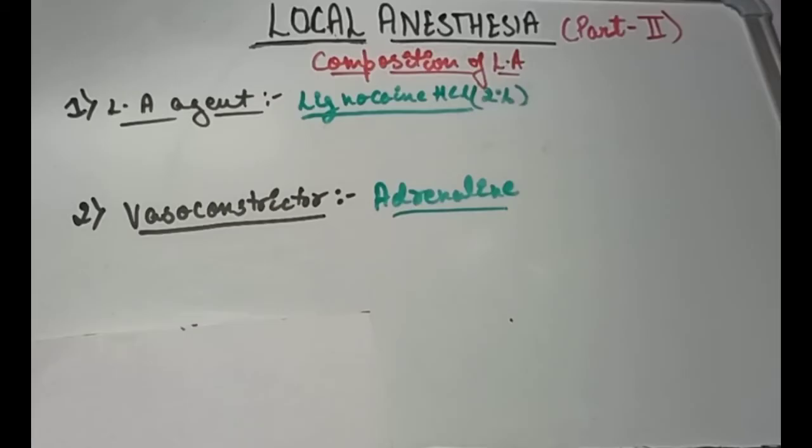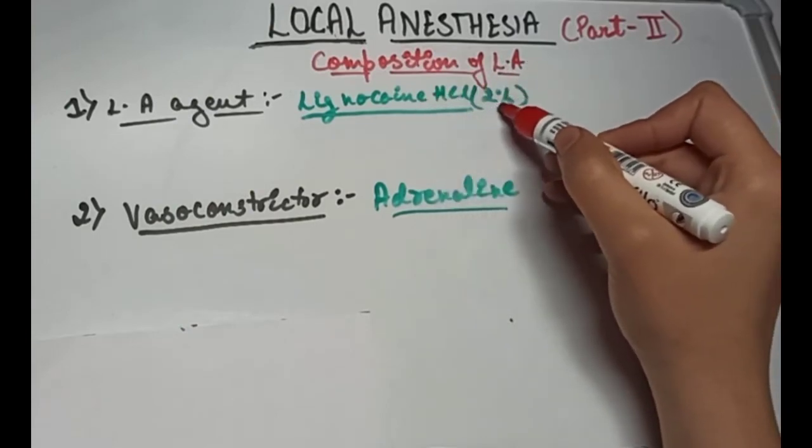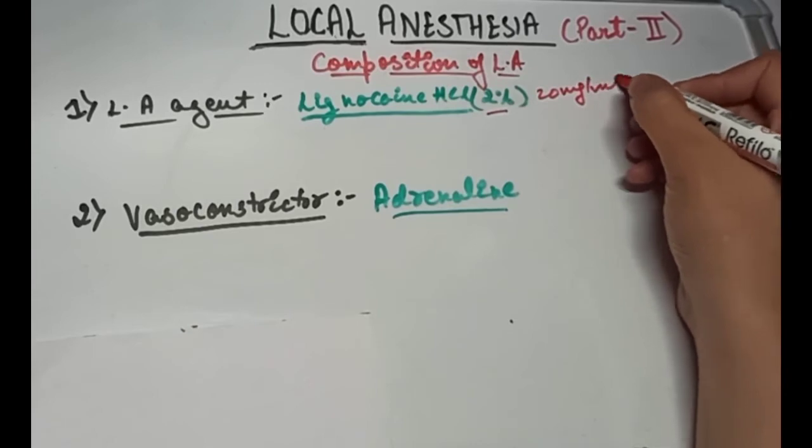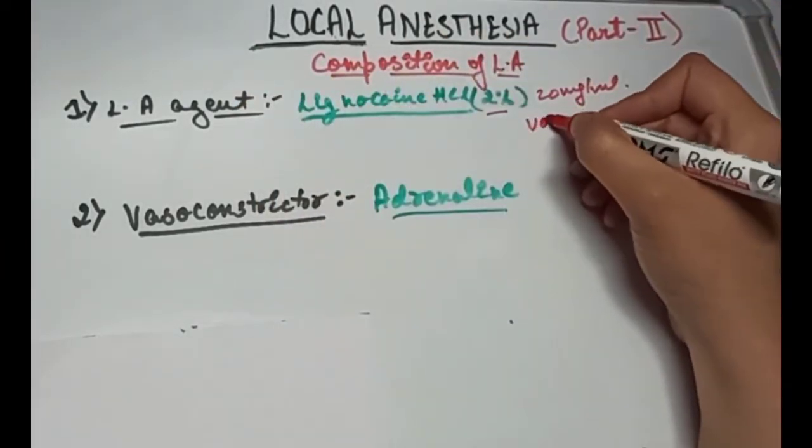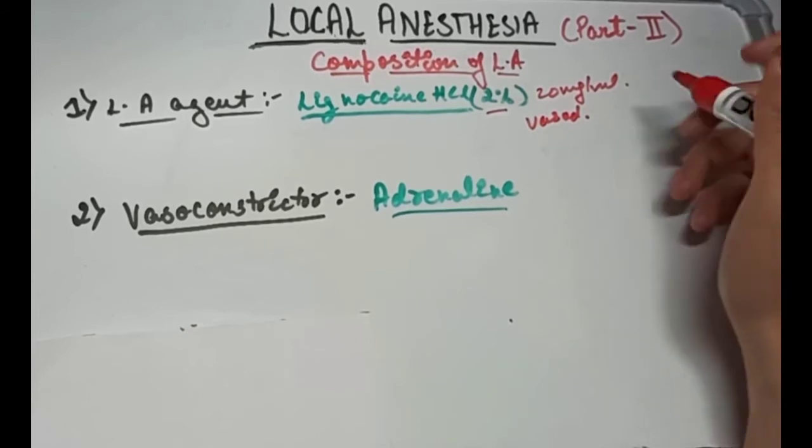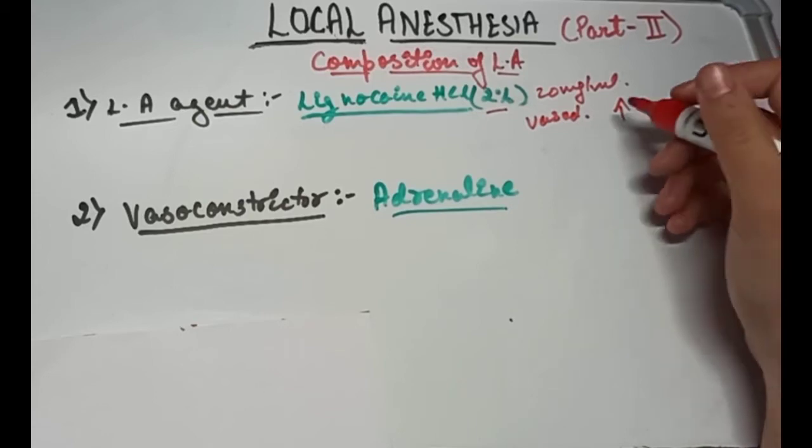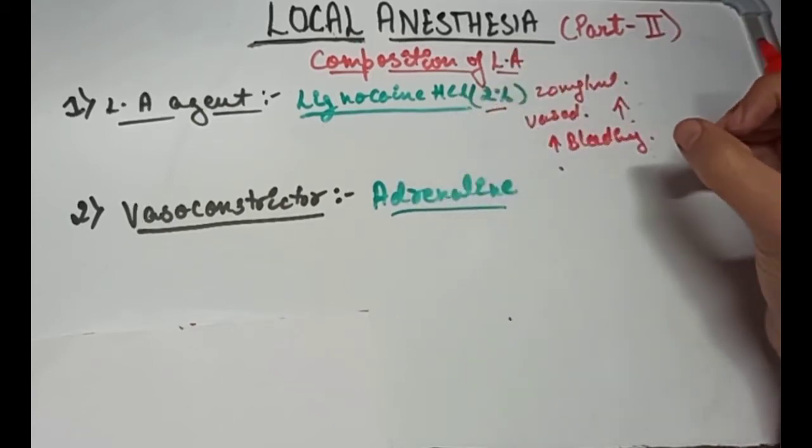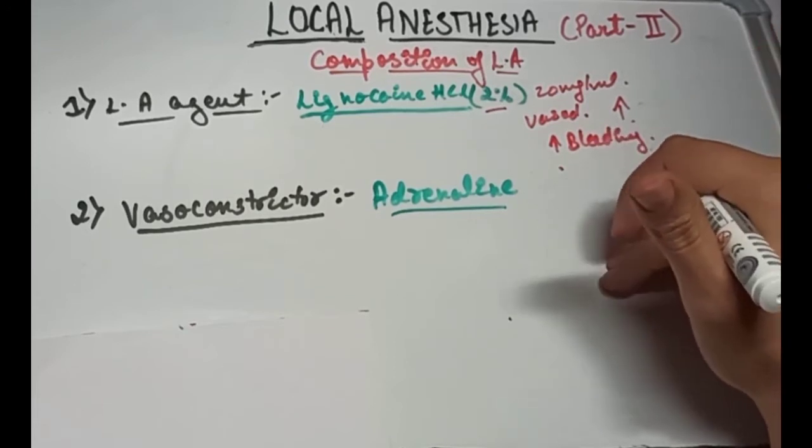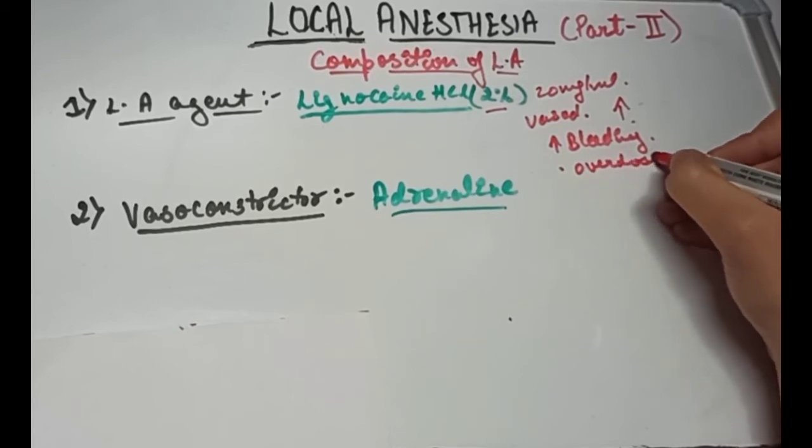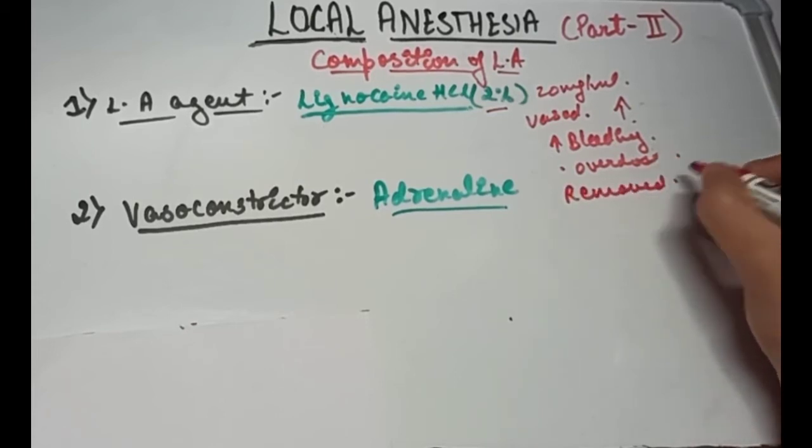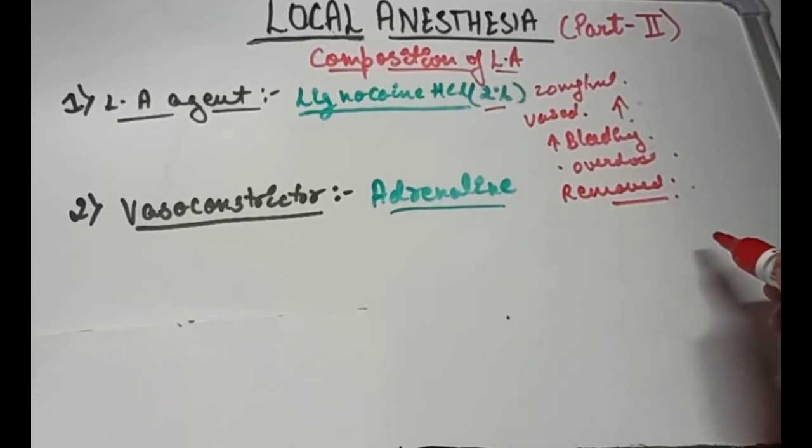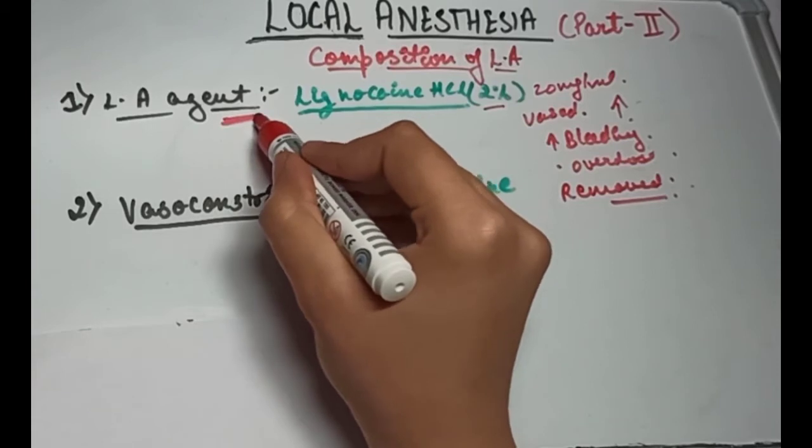Now let's see the composition of LA. First component is the LA agent, that is the lignocaine hydrochloride. In dentistry, we use it in 2% concentration, that is 20 mg per ml. When we inject LA into the tissues, the blood vessels dilate because the LA agent has a vasodilatory effect. This increases blood flow into the tissues, leading to increased bleeding at the site of injection. LA is quickly absorbed into the bloodstream, which increases the levels of drug in the blood, thereby increasing the risk of overdose. The third thing that happens because of vasodilation is LA is quickly removed from the injection site. Because of this, it produces less effective anesthesia. So to counteract the vasodilatory effect, we need to add a vasoconstrictor.